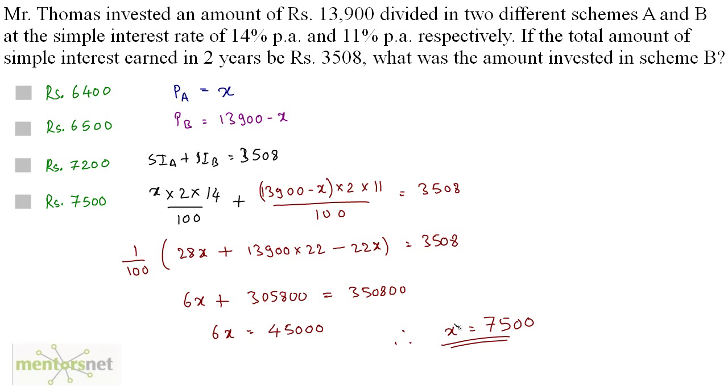So we have found out X that is the amount invested in scheme A. What is the amount invested in scheme B? That's 13,900 minus X so minus 7,500 and that is equals to 6,400. So we have found out our answer that 6,400 that is the amount invested in scheme B. So option A is the correct answer.